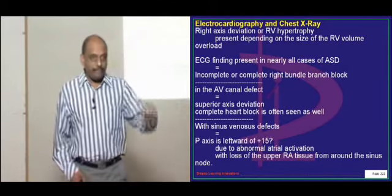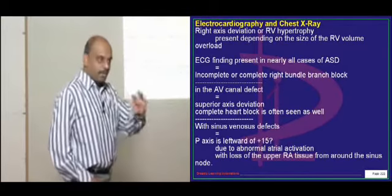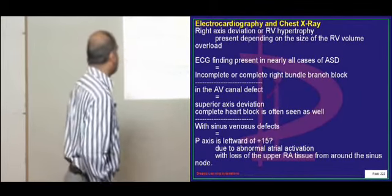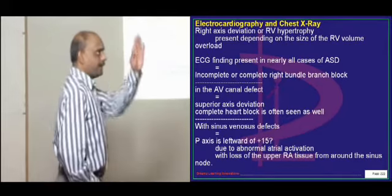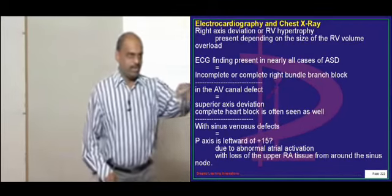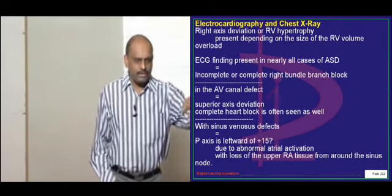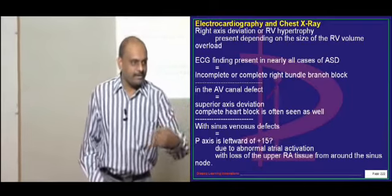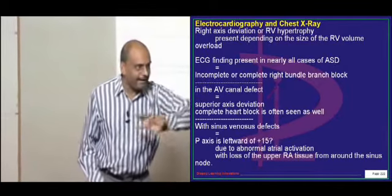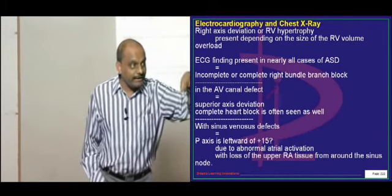Sinus venosus type of ASD has a P axis, just like QRS you have got a P wave axis, which is leftward. What is the reason? Generally the SA node will be the dictator; it will dictate the conduction of the impulse electrical signal into the whole of the atria. But here, because of a defect which is a little above the level of the SA nodal location...